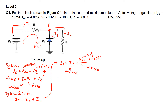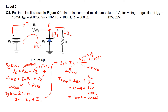To find It minimum, we substitute Iz with Izk. So It_min equals Izk plus Vz over RL, which gives 10 mA plus 10 volts divided by 500 ohms, which is 10 mA plus 20 mA. Therefore It_min equals 30 mA.